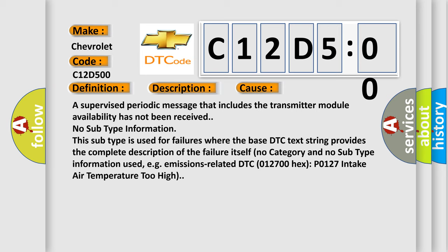No subtype information. This subtype is used for failures where the base DTC text string provides the complete description of the failure itself. No category and no subtype information used, for example, emissions-related DTC P0127, intake air temperature too high.